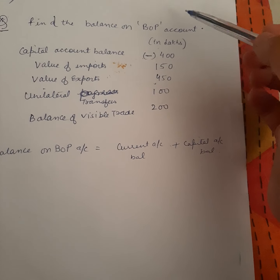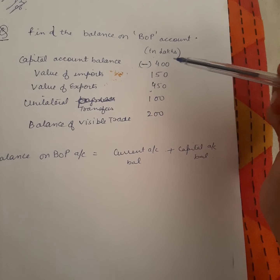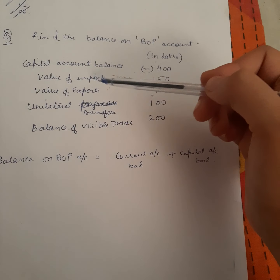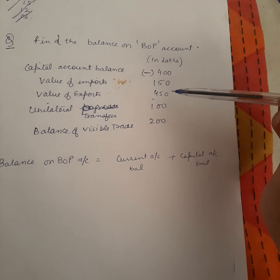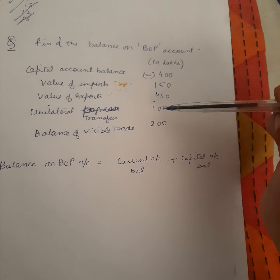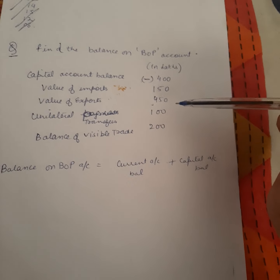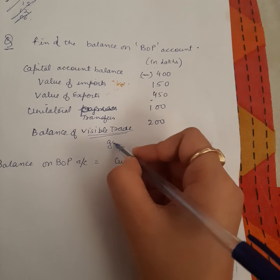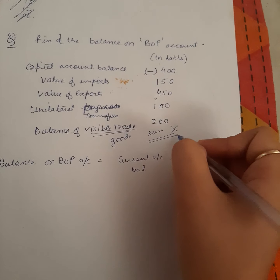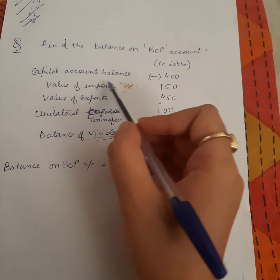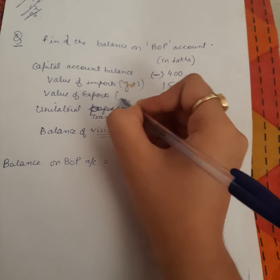Next: find the balance on the Balance of Payment account. Capital account balance is given as negative 400, value of imports is 150, value of exports is 450, unilateral payments are 100, and balance of visible trade is 200. Note that balance of visible trade covers only goods, not services, whereas value of imports and exports covers both goods plus services.